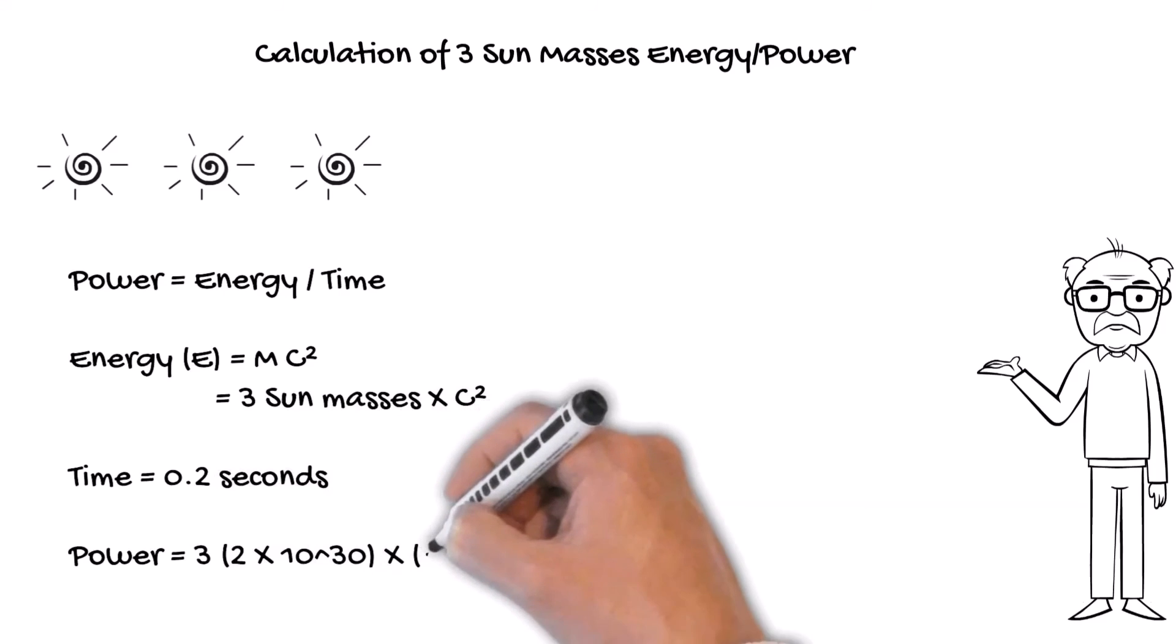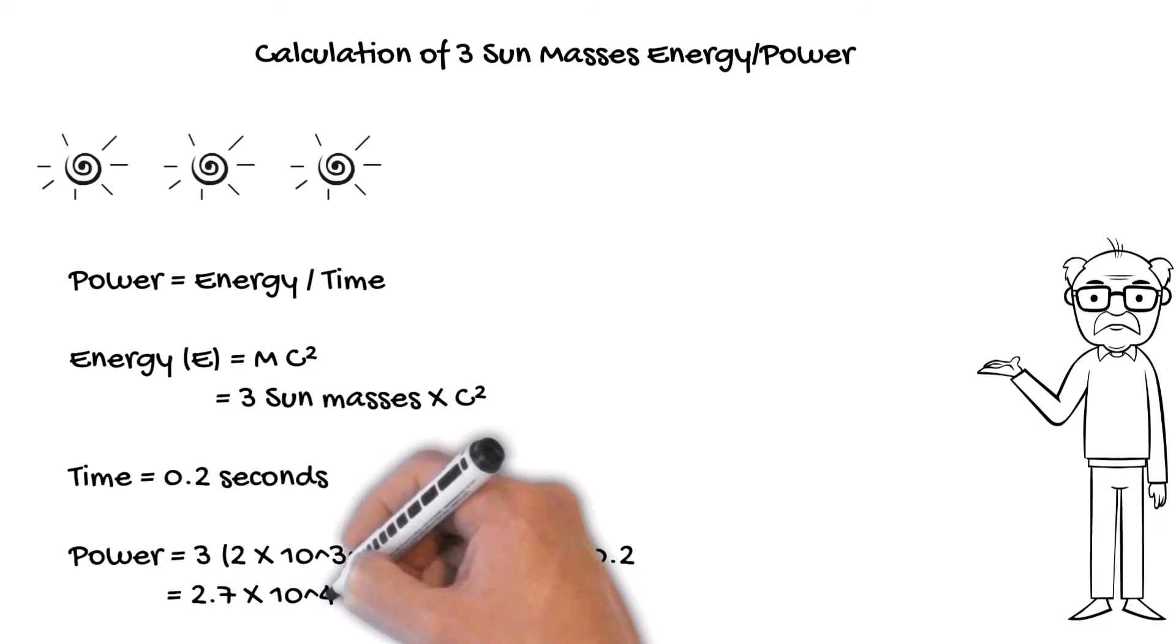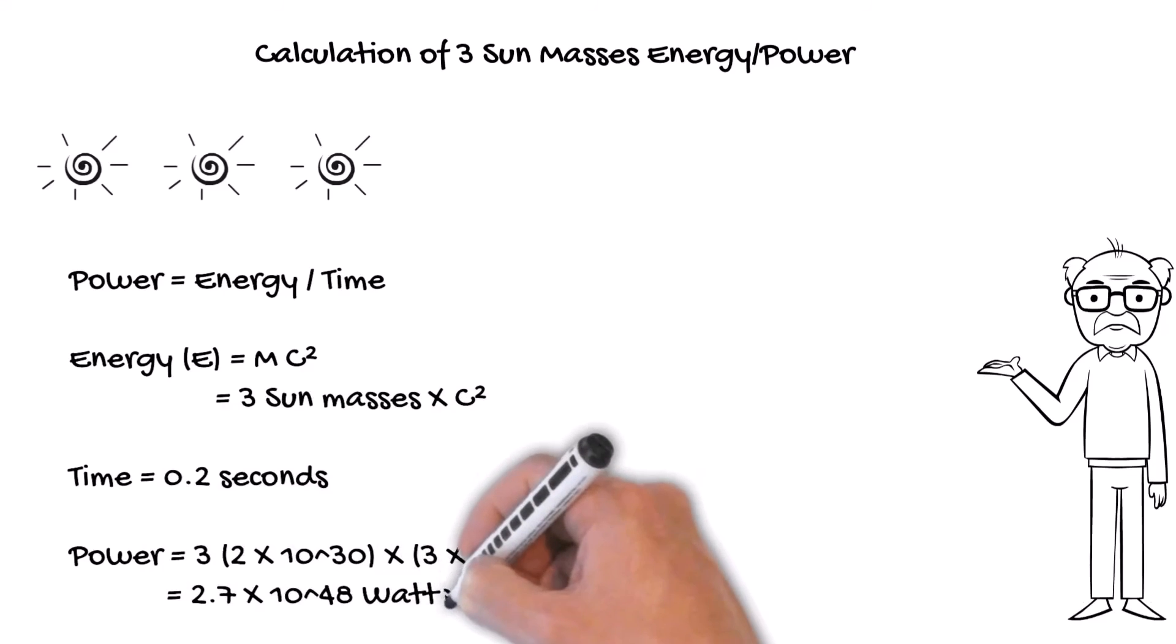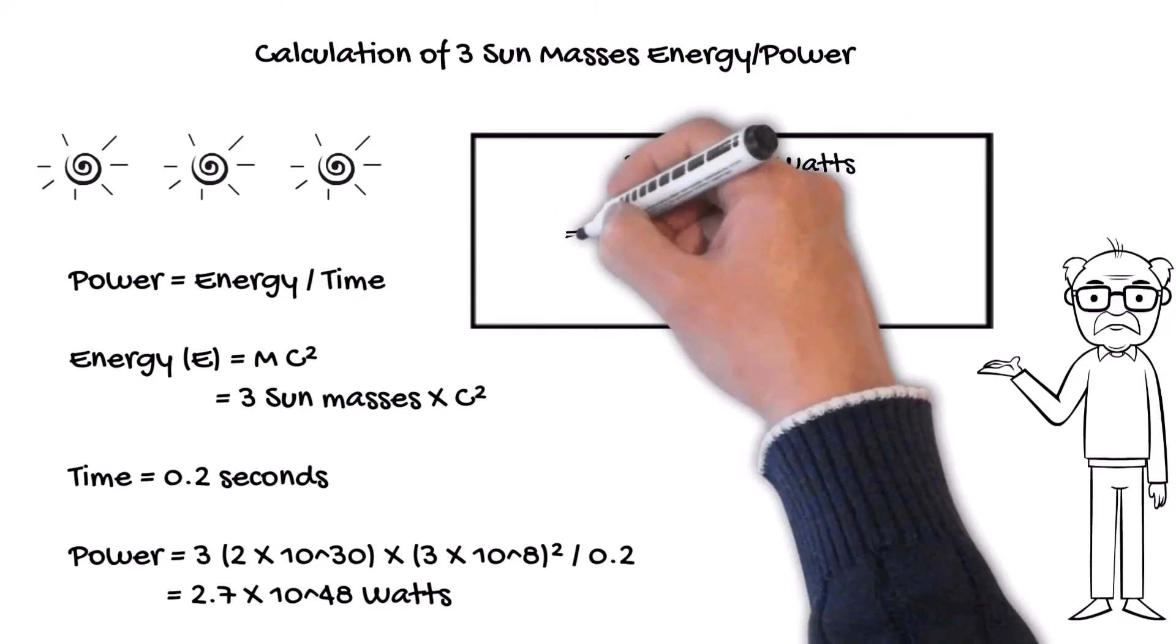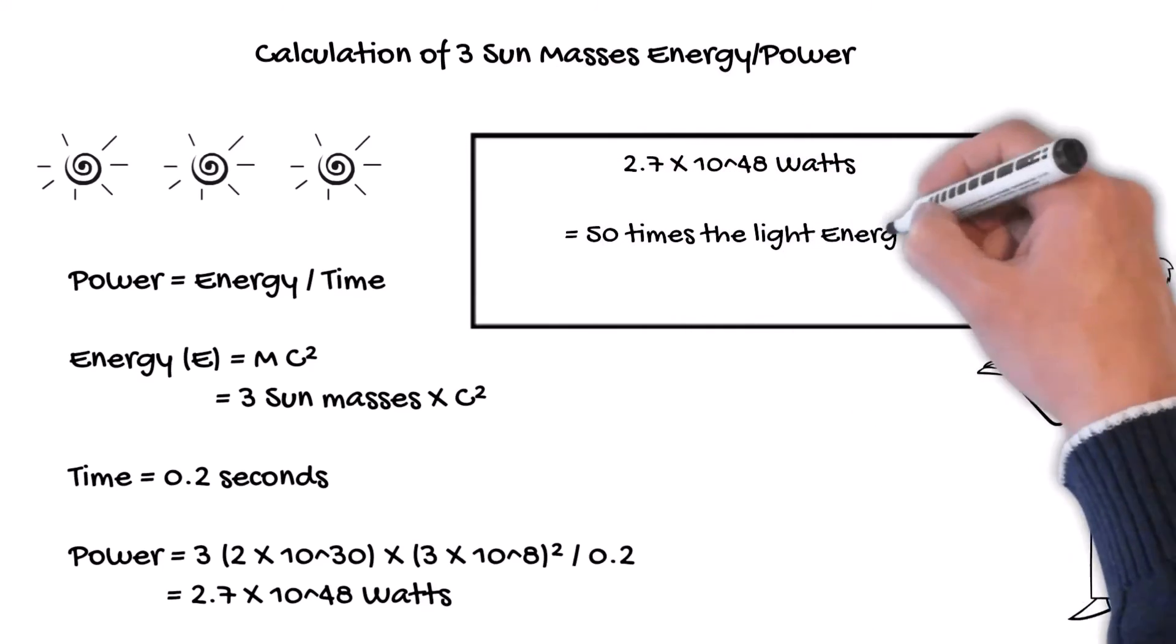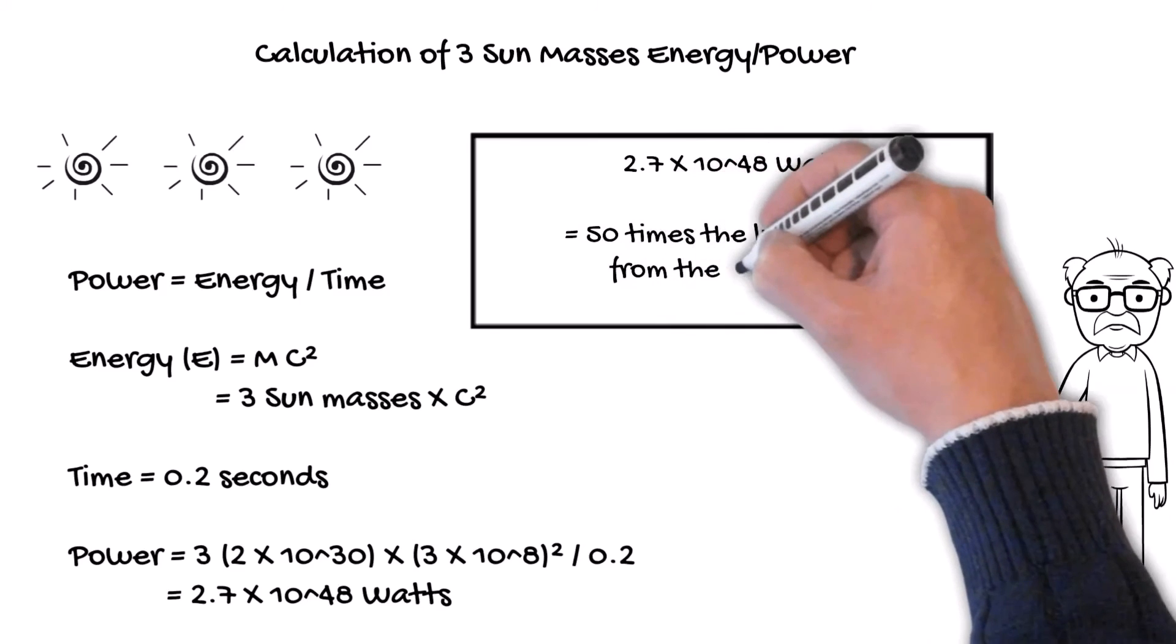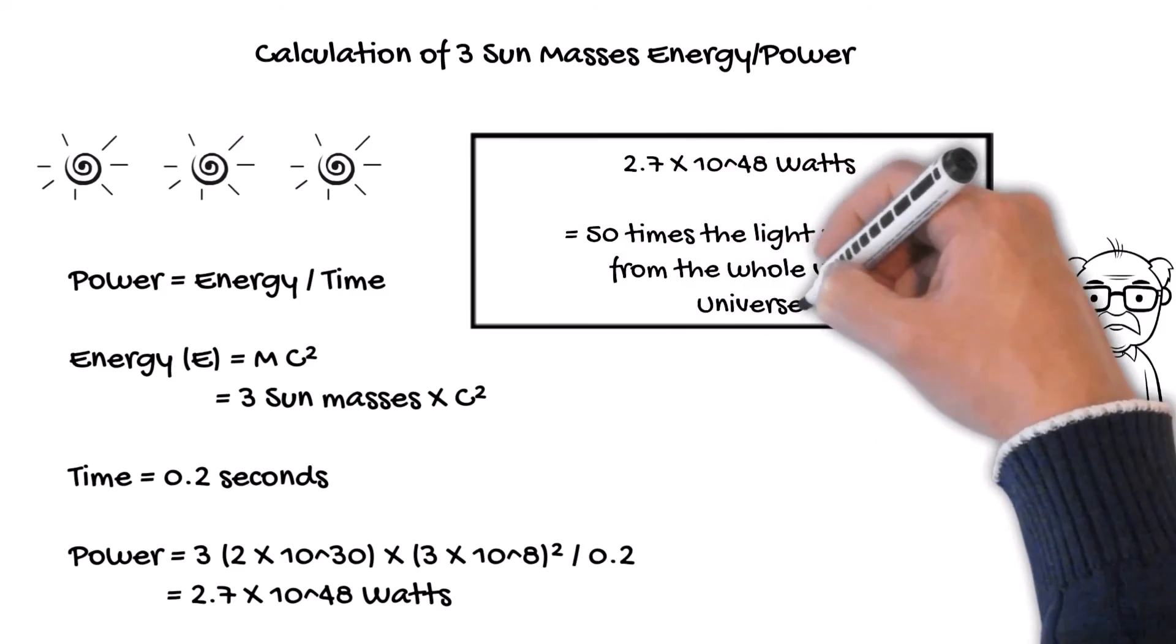This equals to an overwhelming 2.7 × 10^48 watts—10 and 48 zeros to the right of it. This vast energy was 50 times more than the light emitted by all stars in the visible universe combined.